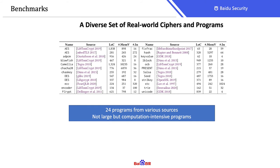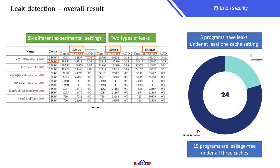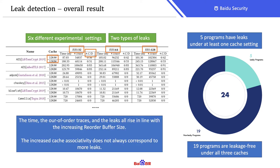We conduct experiments on a set of real-world ciphers and crypto programs. In total, we collected 24 programs from more than 10 different sources. They are typically not large programs but very computation intensive. We use two different set-associative cache settings and three different processor re-order buffer size parameters to run the experiments, and we focus on two timing leak types as introduced in the cache leak analysis. In total, we found that 19 programs are leakage-free under all experimental settings, and five programs have leaks under at least one setting. The amount of out-of-order traces and the amount of leaks all increase in line with the increasing re-order buffer size. However, the increased cache associativity does not always correspond to more leaks.